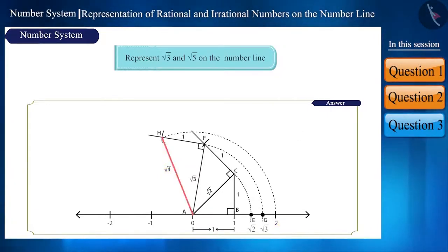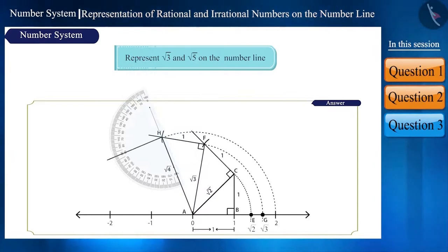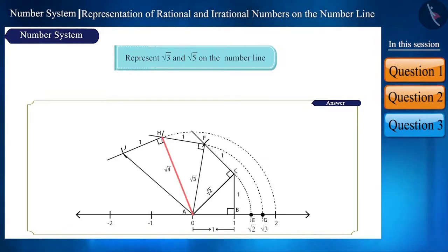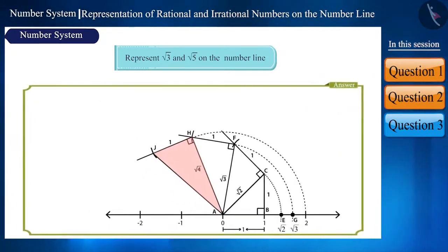Now to represent root 5 on the number line, we will draw a perpendicular on the line AH and measure a distance of one unit using a compass and draw an arc on the perpendicular which cuts it at point J. Now draw a line joining point A and J.